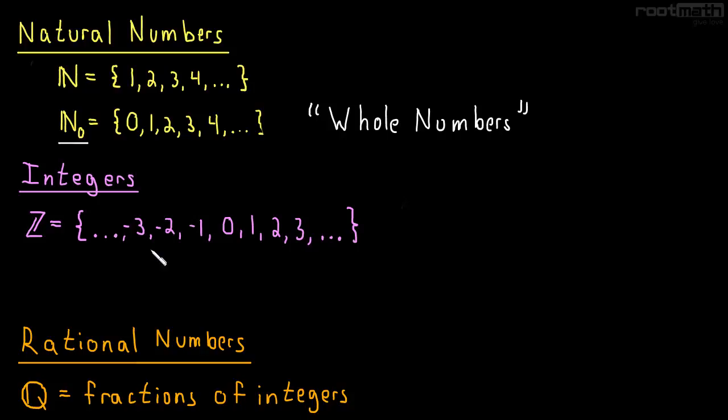Now the integers have all the natural numbers, they have zero, and they have these negative numbers. So an example of an integer is something like negative 7. Now negative 7 is an integer, but it's not a natural number, because there's no negatives in the natural numbers.